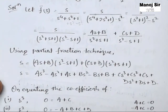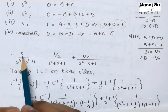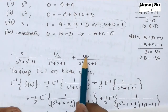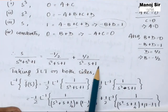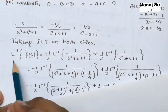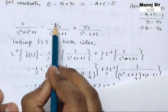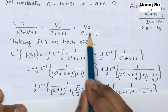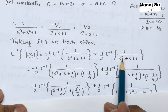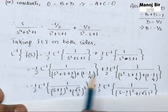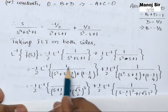Substituting A = 0, C = 0, B = −1/2, D = 1/2, we get F̄(s) = (−1/2)/(s² + s + 1) + (1/2)/(s² − s + 1). Taking inverse Laplace transform of both sides: L⁻¹{F̄(s)} = −(1/2)·L⁻¹{1/(s² + s + 1)} + (1/2)·L⁻¹{1/(s² − s + 1)}.